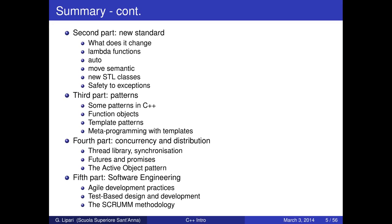The fourth part is quite quick — I'll describe how to do concurrent programming in C++. This is important because today, with the wide diffusion of multi-core computers and multiple processors, it's important to be able to program in a parallel way. The fifth part is on software engineering — the pillars of agile development, test-based design, and the Scrum methodology for agile development.